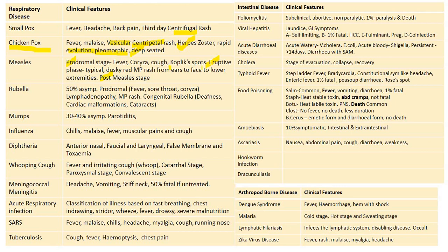For measles, it consists of three stages: prodromal stage, eruptive stage, and post-measles stage. Prodromal stage presents with fever, coryza, cough, and Koplik spots which are diagnostic. The eruptive phase has a typical dusky maculopapular rash starting from the ears to the face to the lower extremities. The post-measles phase presents with a depraved face with malnutrition.